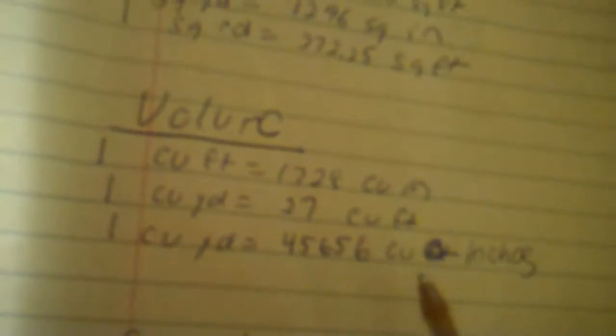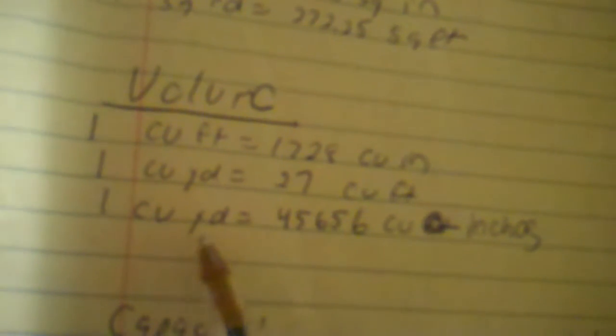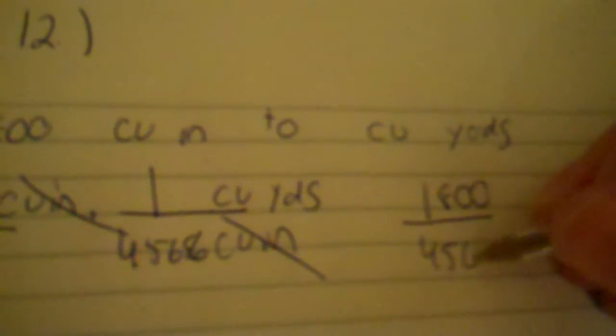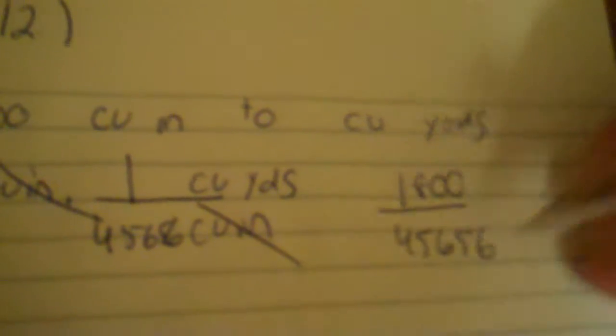It's one cubic yard equals 46,656 cubic inches. So one is with cubic yards and 46,656 is with cubic inches. So we cancel those. So we have 1800 over 46,656.